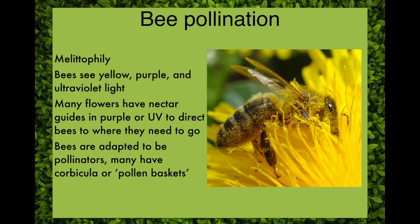Bees that pollinate flowers exist because the flowers have made them. Bees have adapted from solitary bees — the majority of bees are solitary — but social bumblebees and honeybees have only existed since there have been flowering plants to provide them with the pollen they need to make honey and rear their young. Eusocial or truly social insects with the queen, workers, and drones have only existed as long as flowering plants have supported them. Bees have many adaptations making them ideal pollinators, including their hairy bodies.